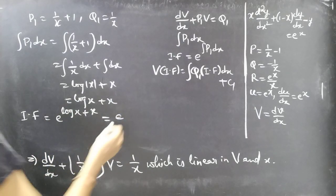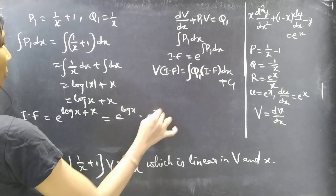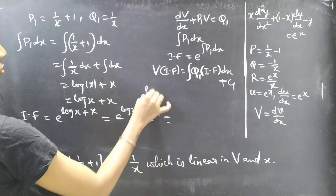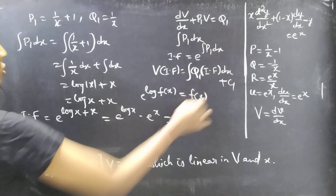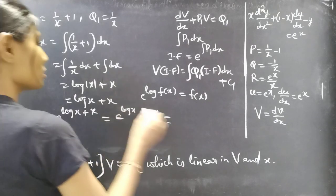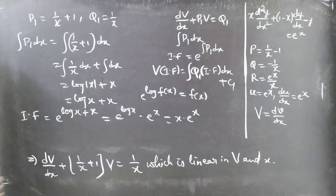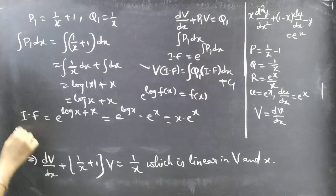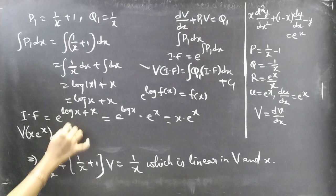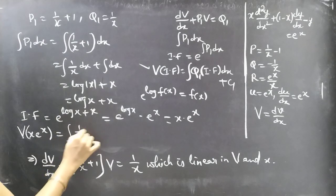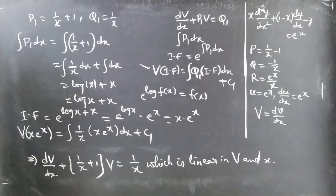The integrating factor is e^(log x + x) = e^(log x) · e^x = x · e^x. Using the general solution formula V · (integrating factor) = ∫Q₁ · (integrating factor) dx + C₁, we get V · x · e^x = ∫(1/x) · x · e^x dx + C₁.